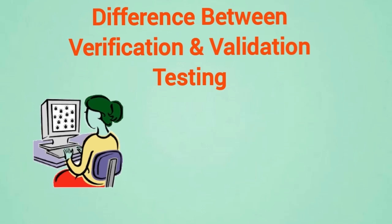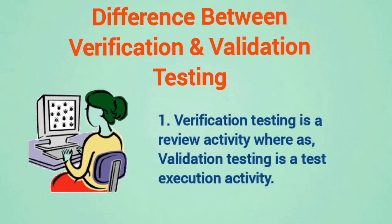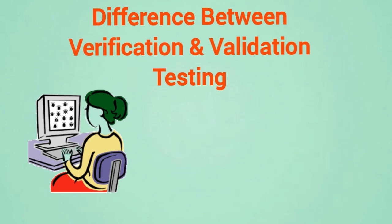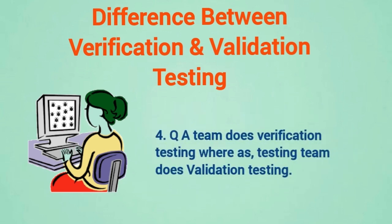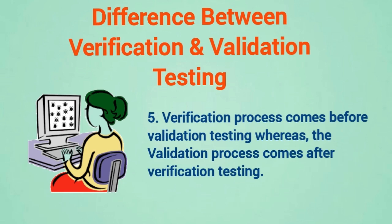Difference between verification and validation testing. First, verification testing is a review activity whereas validation testing is a test execution activity. Second, verification testing involves static testing techniques whereas validation involves dynamic testing techniques. Third, verification testing checks documents like plans, requirements specification, design specification, code, test cases, etc., whereas validation testing checks the actual product. Fourth, QA team does verification testing whereas testing team does validation testing. Fifth, verification process comes before validation testing whereas validation process comes after verification testing.